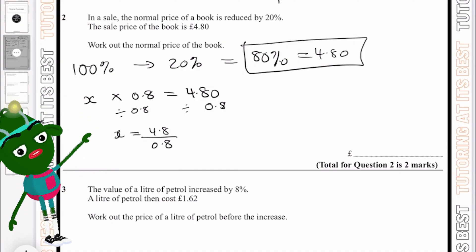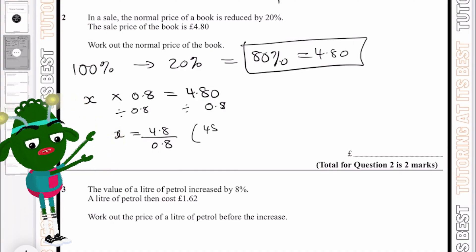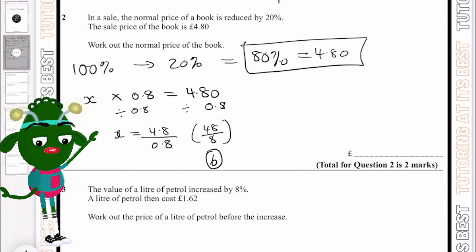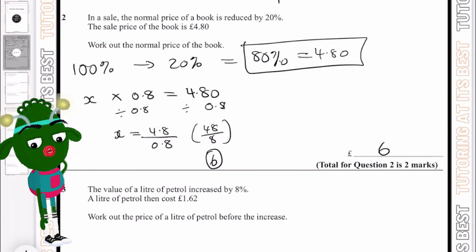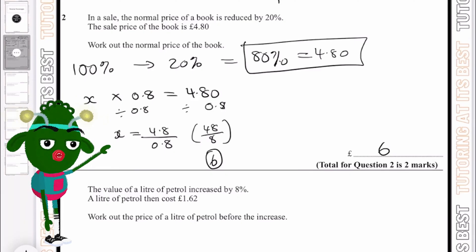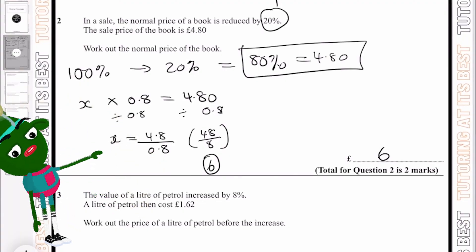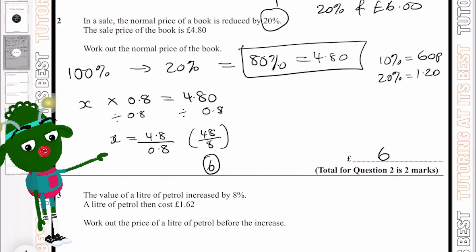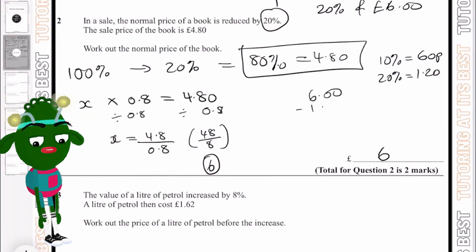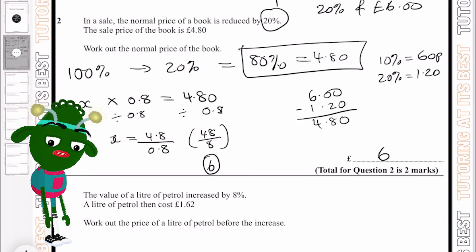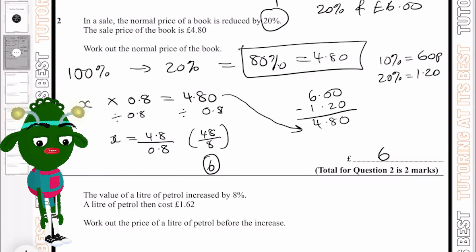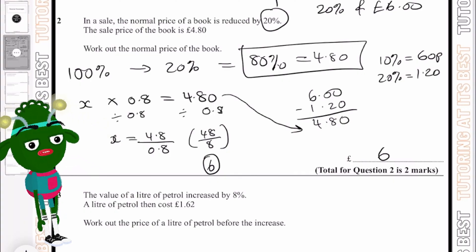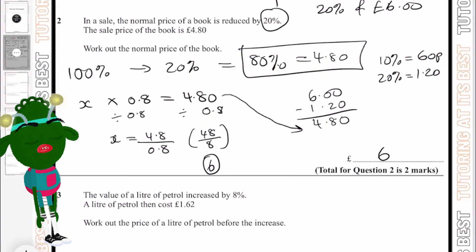That will leave me with x equals 4.8 divided by 0.8. So how do I do this without a calculator? I can simply eliminate the decimals, so I'm left with 48 divided by 8, and that gives me 6. So now I know the price of the book was £6 before it went on sale. A way for me to check this is by simply working out 20% of £6. I know 10% is 60 pence, so 20% will be £1.20. If I now take £6 and subtract £1.20, this should give me £4.80 which is the price that we had initially. Don't forget to pause the video, attempt the question, and press play when you're ready to go.